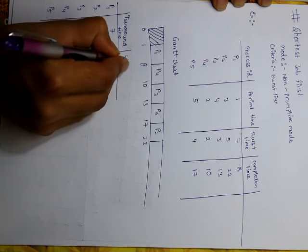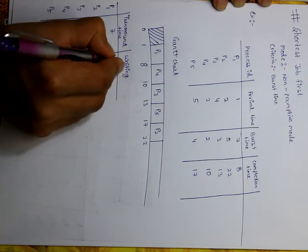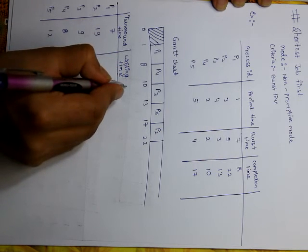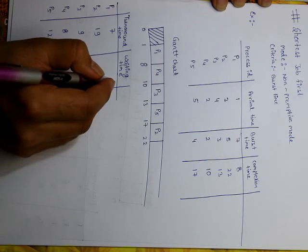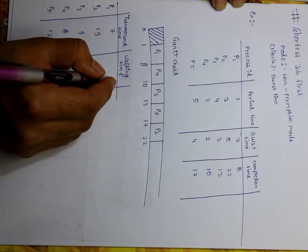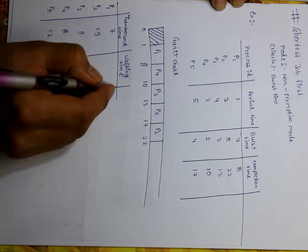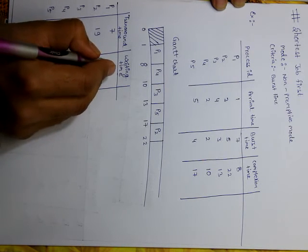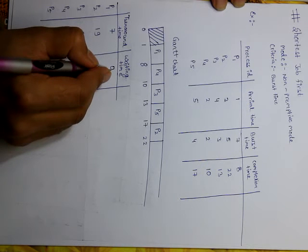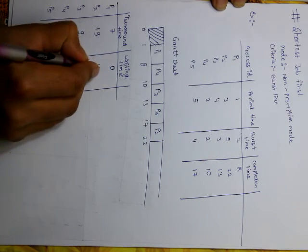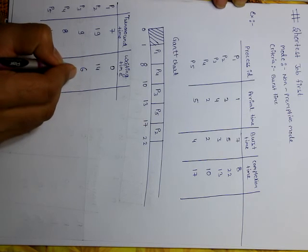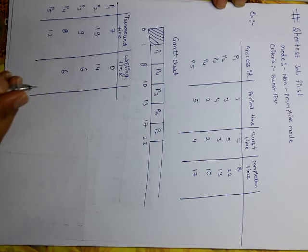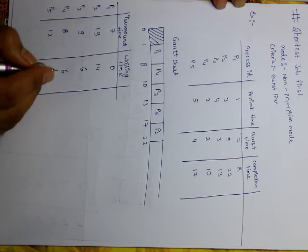Now we are going to calculate the waiting time. Waiting time is turnaround time minus burst time. Waiting time of P1 is 7 minus 7, that is 0. P2 is 19 minus 5, that is 14. P3 is 9 minus 3, that is 6. P4 is 8 minus 2, that is 6. P5 is 12 minus 4, that is 8.